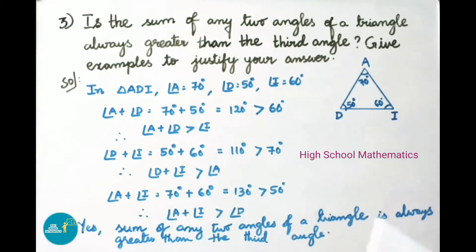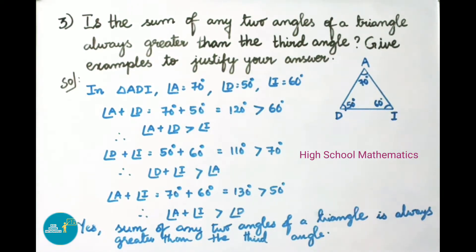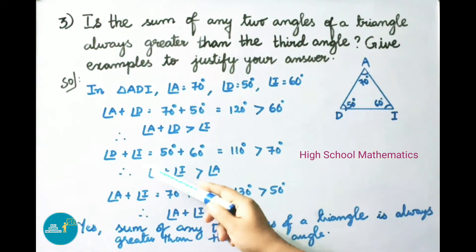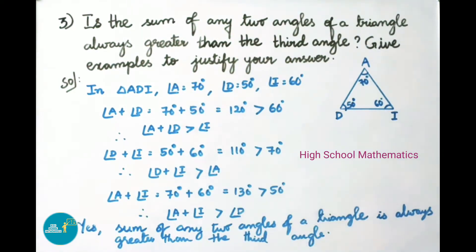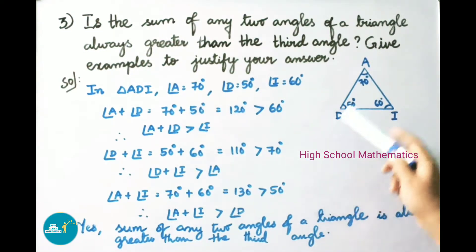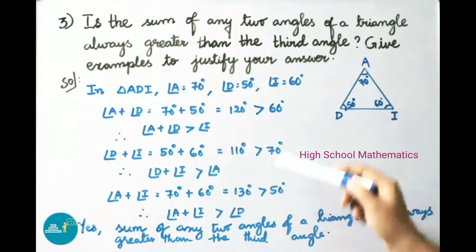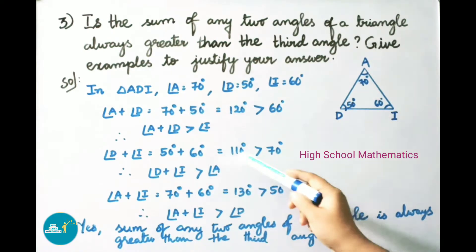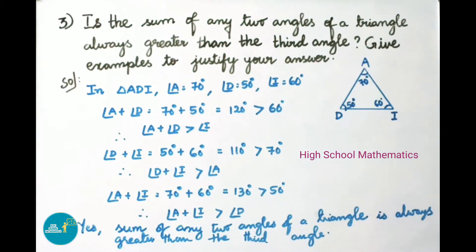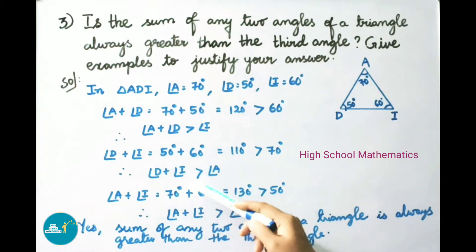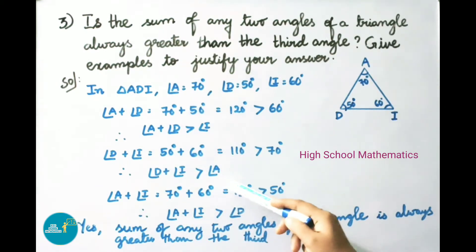Now we take the other two angles, angle D and angle I. Sum of angle D and angle I equals 50 plus 60 degrees, which equals 110 degrees, and this is greater than the third angle A, which is 70 degrees. That is, 110 degrees is greater than 70 degrees. Therefore angle D plus angle I is greater than the third angle, angle A.